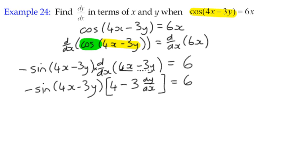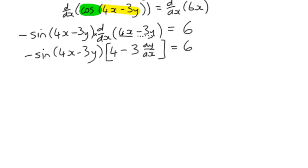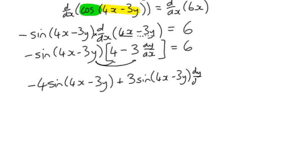That's my derivative as part of the chain rule. So I can multiply then, out of that bracket, multiply everything by negative sin 4x minus 3y, and I get negative 4 sin 4x minus 3y, plus 3 sin 4x minus 3y dy by dx, equals 6.